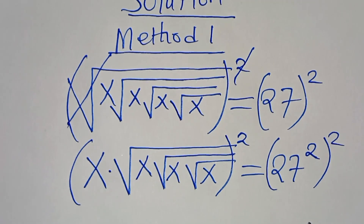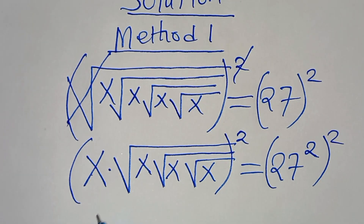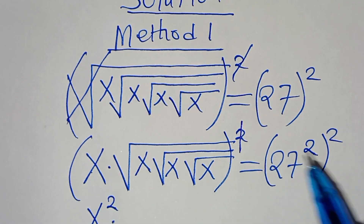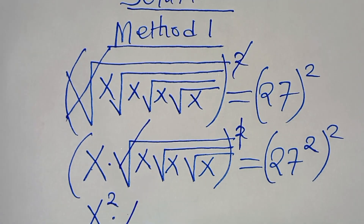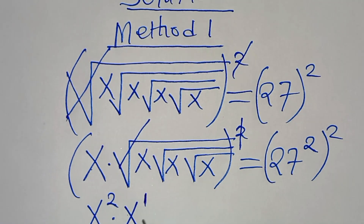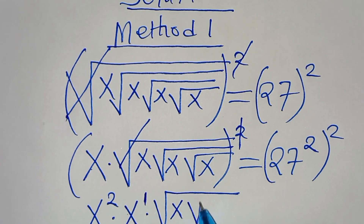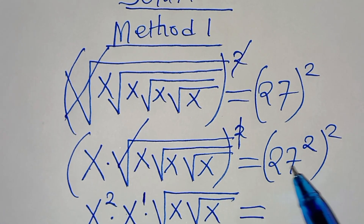After squaring again, we have x squared. We eliminate the second square root sign, giving x raised to the power of 1, times the square root of x multiplied by the square root of x. This is equal to 27 squared, raised to the power of 2.